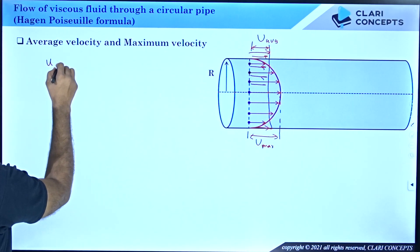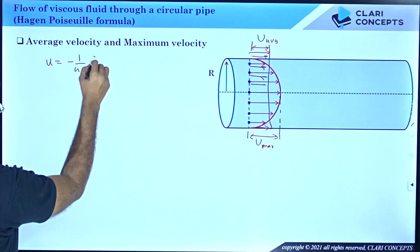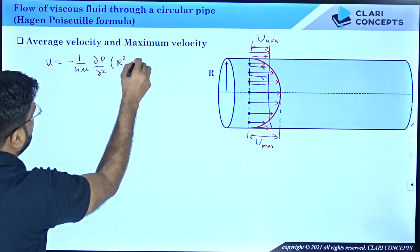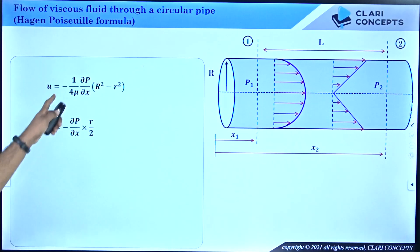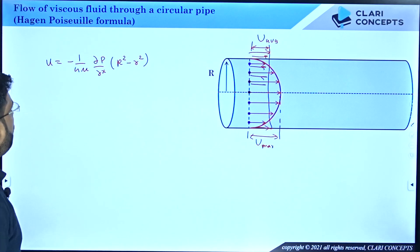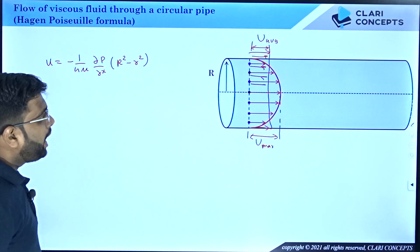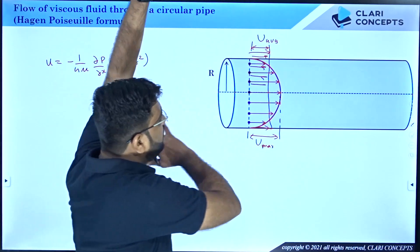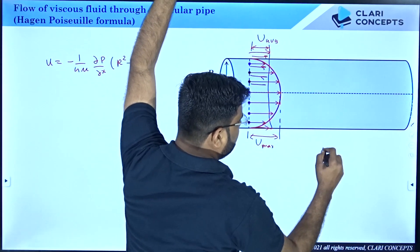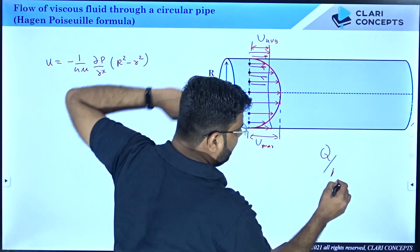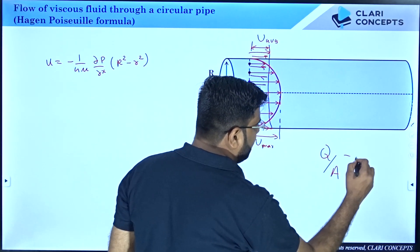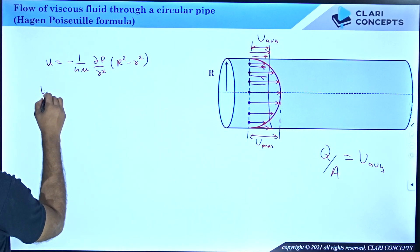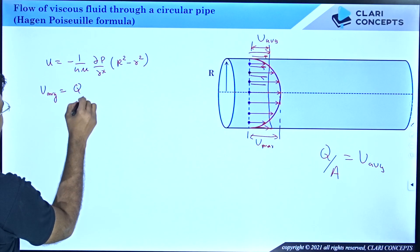The velocity profile equation is: U = −(1/4μ) × (∂P/∂x) × (R² − r²). Now, average velocity is nothing but total flow rate Q divided by cross-sectional area A. This is because Q = A × V, where V is the cross-sectionally averaged velocity over the entire area.